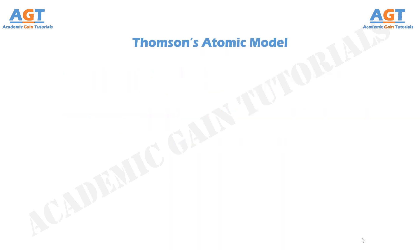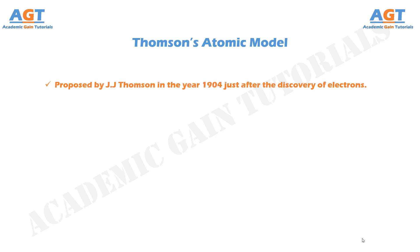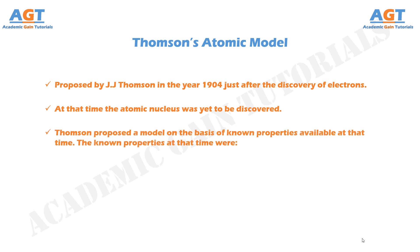In this video, we will discuss in detail about Thomson's atomic model. The Thomson's atomic model is one of the many scientific models of the structure of an atom. It was proposed by J.J. Thomson in the year 1904, just after the discovery of electrons. However, at that time, the atomic nucleus was yet to be discovered, so he proposed a model on the basis of known properties available at that time.